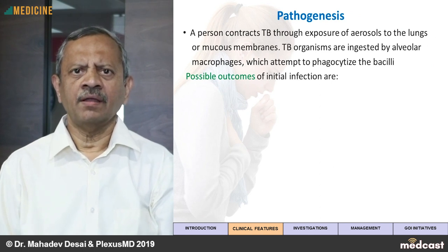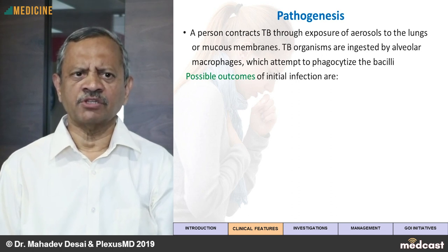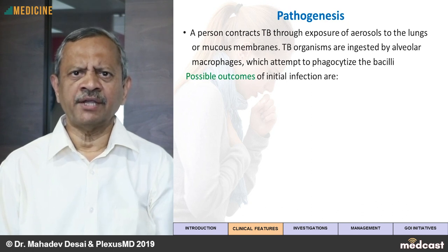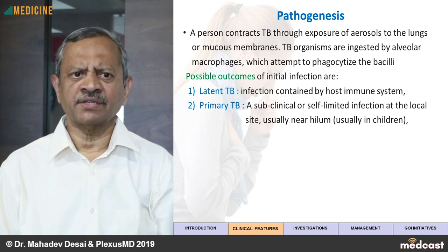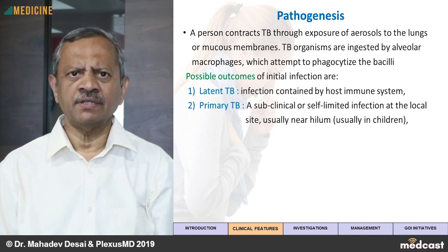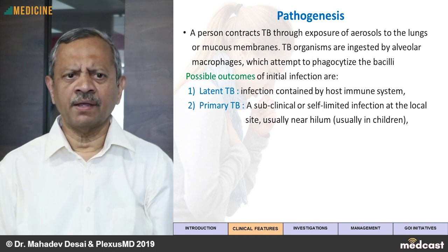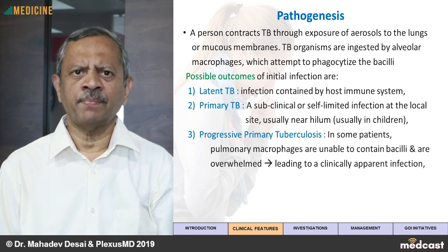How tuberculosis is caused? A person contracts tuberculosis through exposure of aerosols to the lungs or mucous membranes. The tuberculosis organisms are then ingested by the alveolar macrophages, which attempt to phagocytize the bacilli and contain the infection. If the person's immune status is good, the infection will be contained and the patient will not develop active disease — that is called latent tuberculosis. But if the immune status is not good, there may be a subclinical or self-limited infection at the local site in the lung, usually near the hilum, forming the primary tuberculosis complex — also called Ghon's complex — which is usually seen in children.